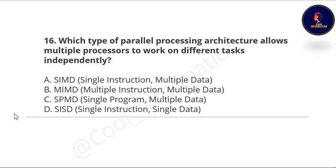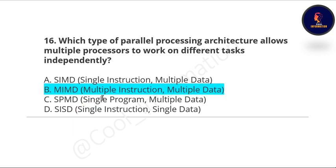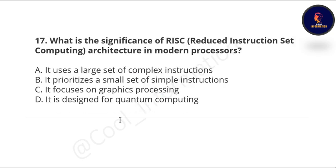Next question: which type of parallel processing architecture allows multiple processors to work on different tasks independently? Options are: SIMD, MIMD, SPMD, and SISD. The correct option is MIMD — Multiple Instruction, Multiple Data.